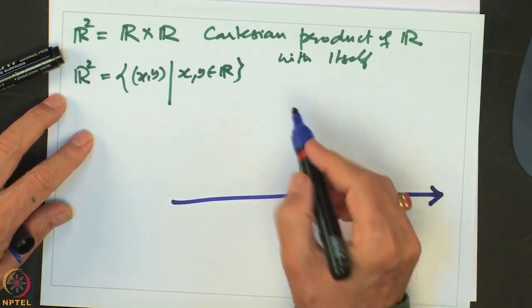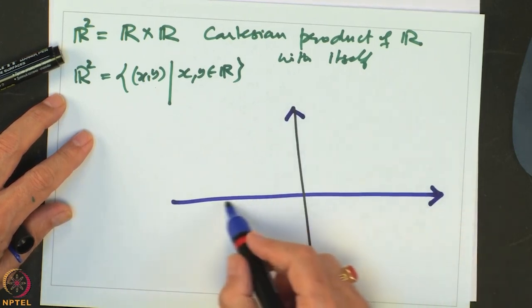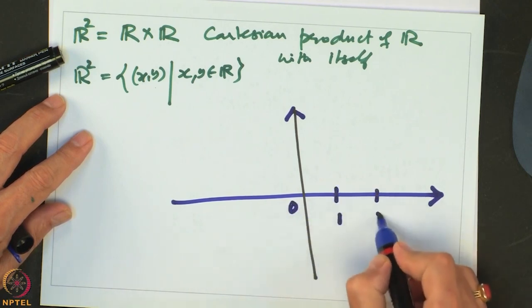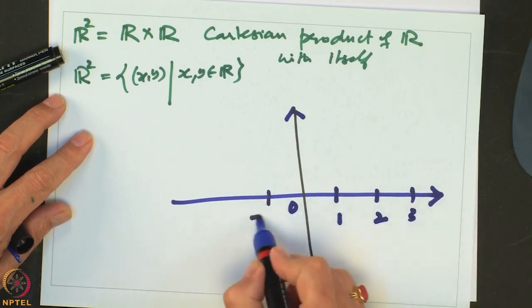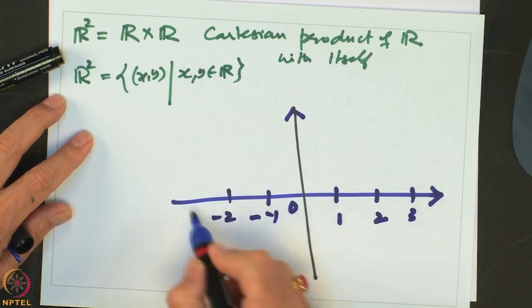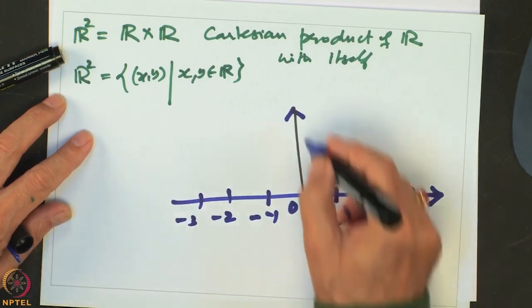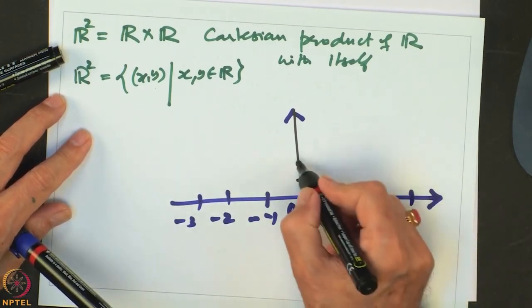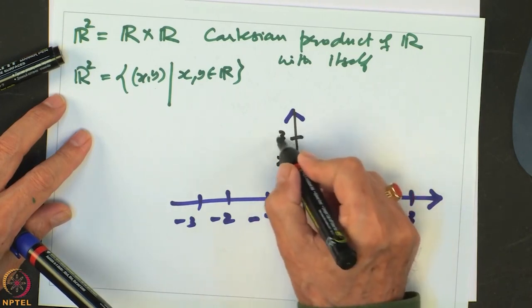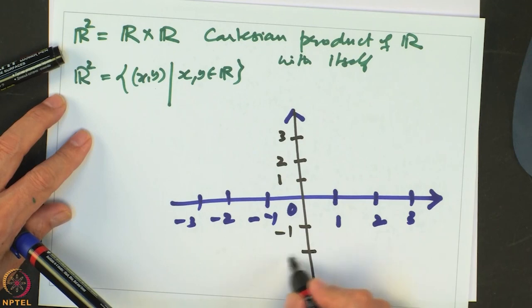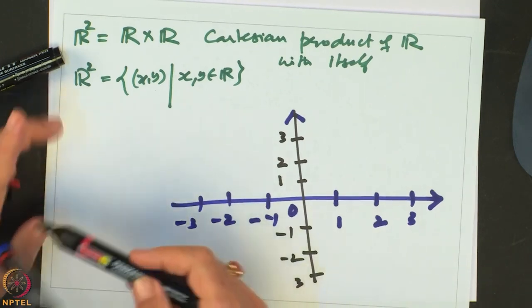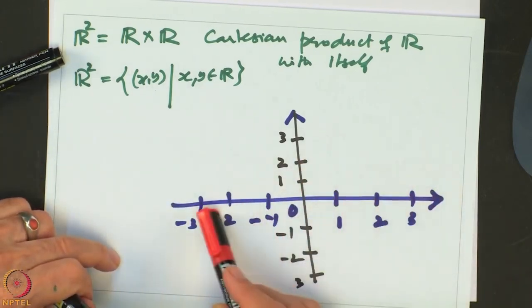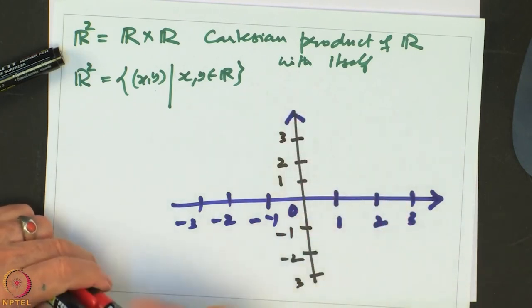We mark these lines with arrows. You can think of each as a copy of the real line starting at 0. On the horizontal line, to the right is 1, 2, 3 and so on; to the left is minus 1, minus 2, minus 3. The vertical line is also a copy of the real line where upward is positive and downward is negative. We have made two copies of the real line — one horizontal, one vertical, both perpendicular to each other.